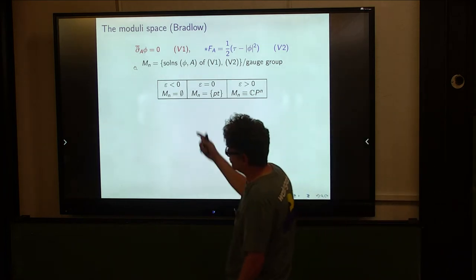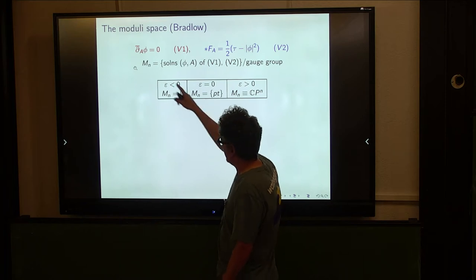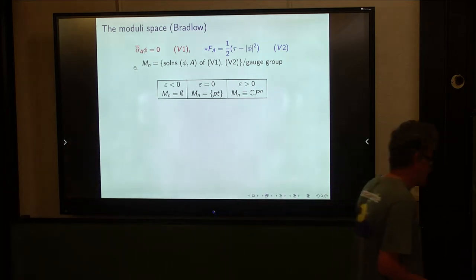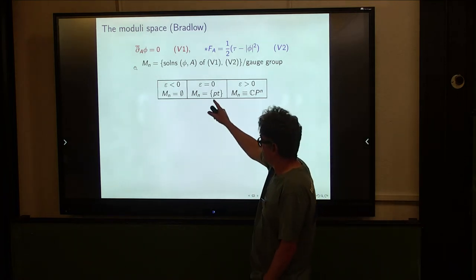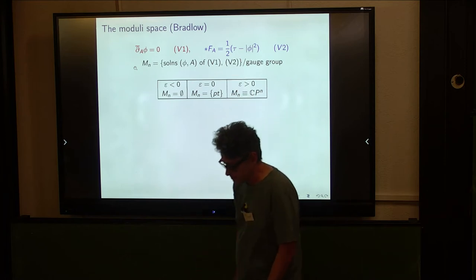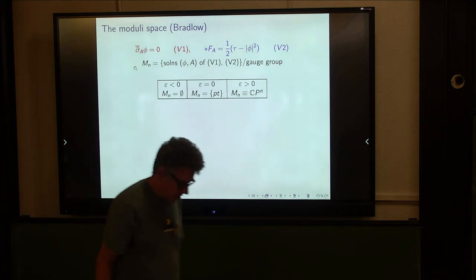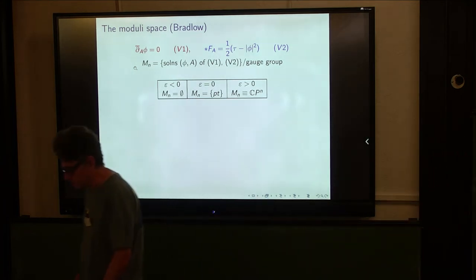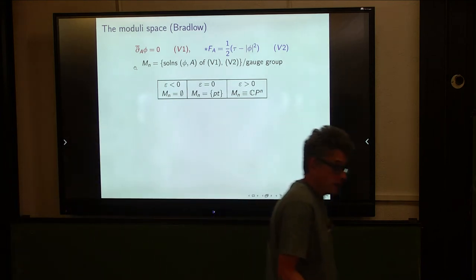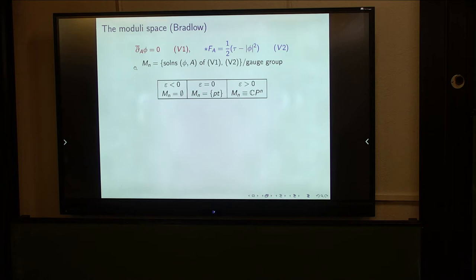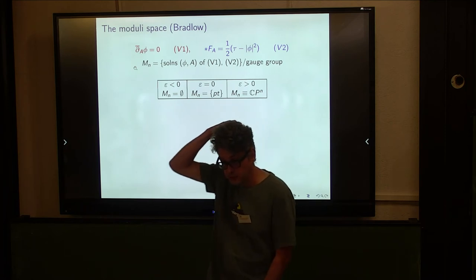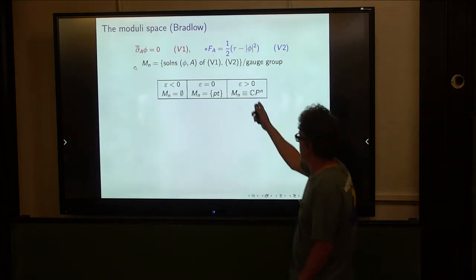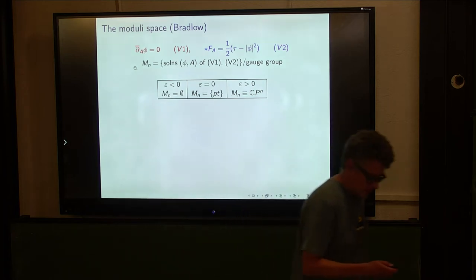If epsilon is zero, every solution has a section with L2-norm zero, so the section must be zero. Then the second equation says the connection must have constant curvature. So the moduli space when epsilon equals zero is precisely the moduli space of constant curvature connections. On a 2-sphere there's only one up to gauge, so the moduli space is a single point: the pair of zero section and constant curvature connection. Much more interesting is the case where epsilon is positive — the moduli space turns out to be CP^N.